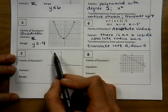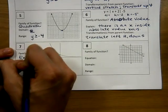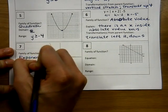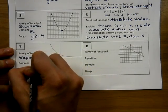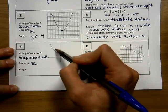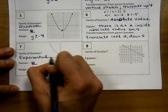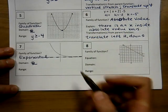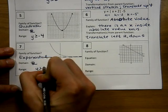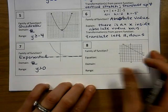Because this is a curve that doesn't go back up, I know that is an exponential function — that's an exponential curve. The domain is all real numbers since the graph goes on forever to the left and right. Exponential functions approach the asymptote but never cross it. The asymptote appears to be the x-axis, so y will always be greater than 0.